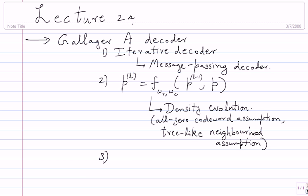The high point of density evolution is the notion of threshold. Threshold in our case was some P-star. Below which, if P is less than P-star, P_L would tend to zero as L tends to infinity. If P is greater than P-star, P_L would tend to a constant value. Threshold is almost like one value which determines the performance of your code. Suppose you decide to use a WC, WR regular LDPC code on a binary symmetric channel — look at the transition probability and compare it with your threshold.